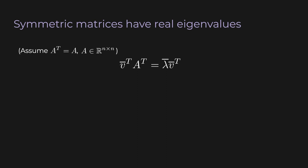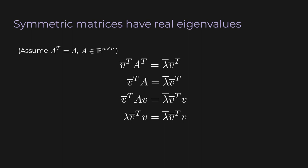Now we use the fact that A is symmetric — it's equal to its transpose. Let's multiply both sides by the vector v. Since v is an eigenvector of A, Av is just lambda v, and we pull out lambda. We recognize that the dot product of v and its conjugate is the norm squared — a scalar — and we know an eigenvector cannot be the zero vector, so the norm can't be zero. Dividing both sides by it gives us lambda equals the conjugate of lambda. The only way that's possible is if the imaginary part of lambda is zero — in other words, lambda is a real number.